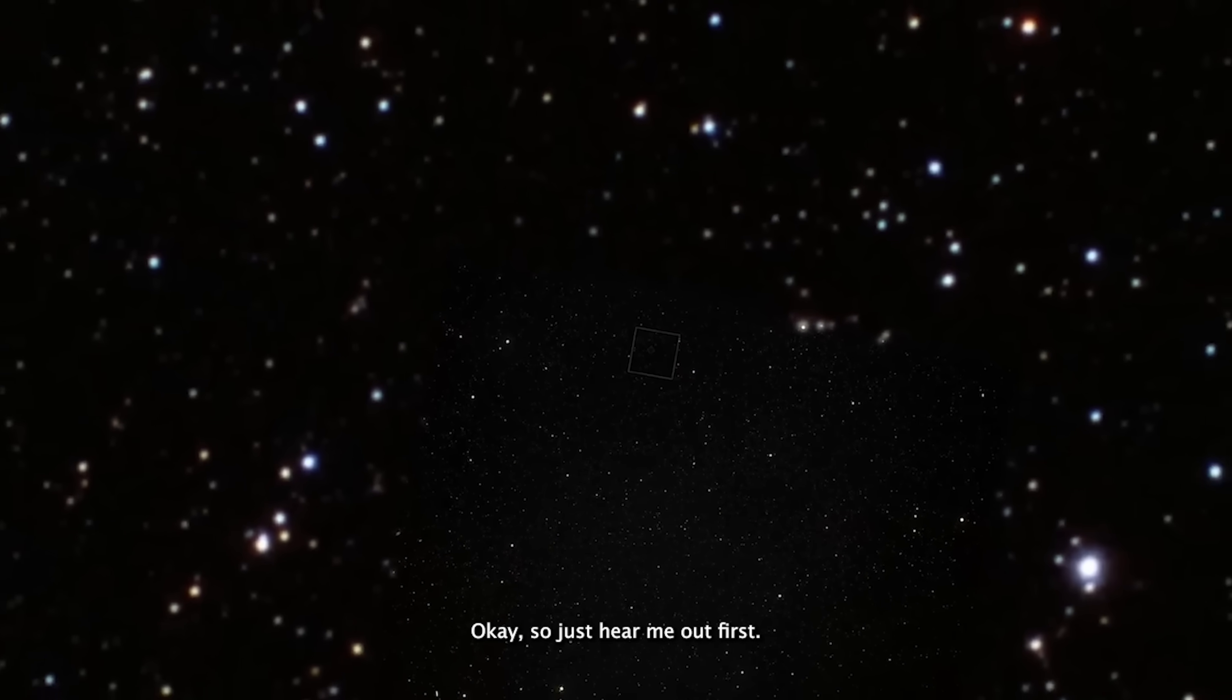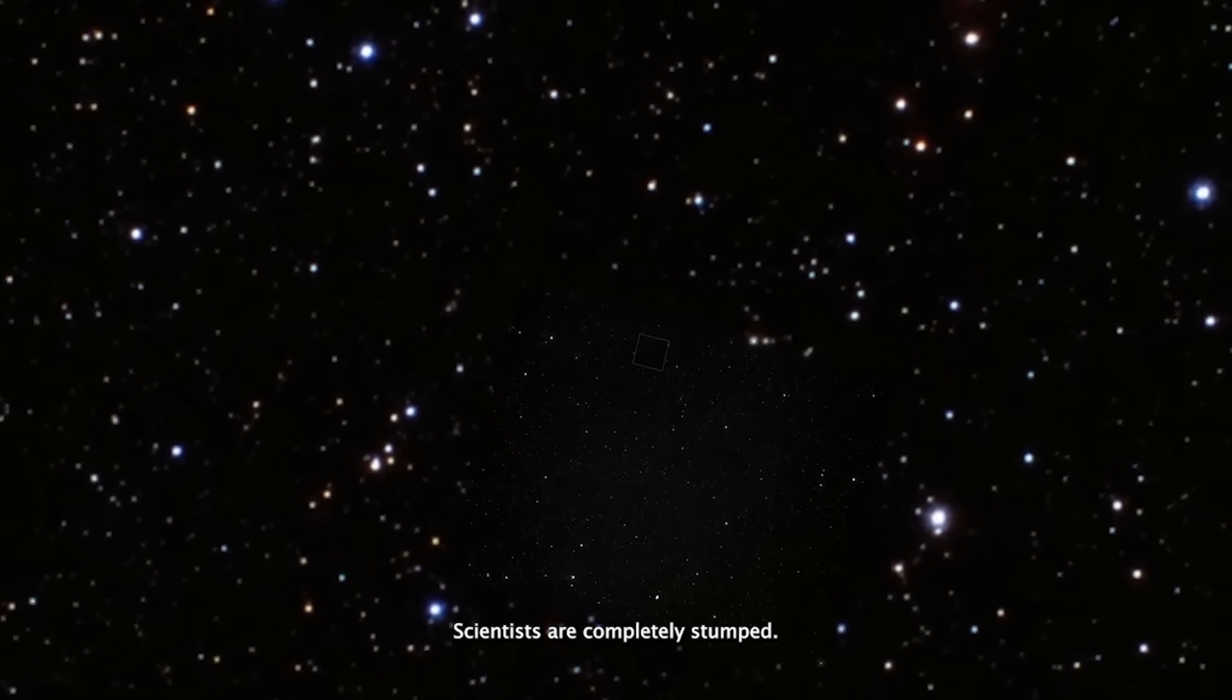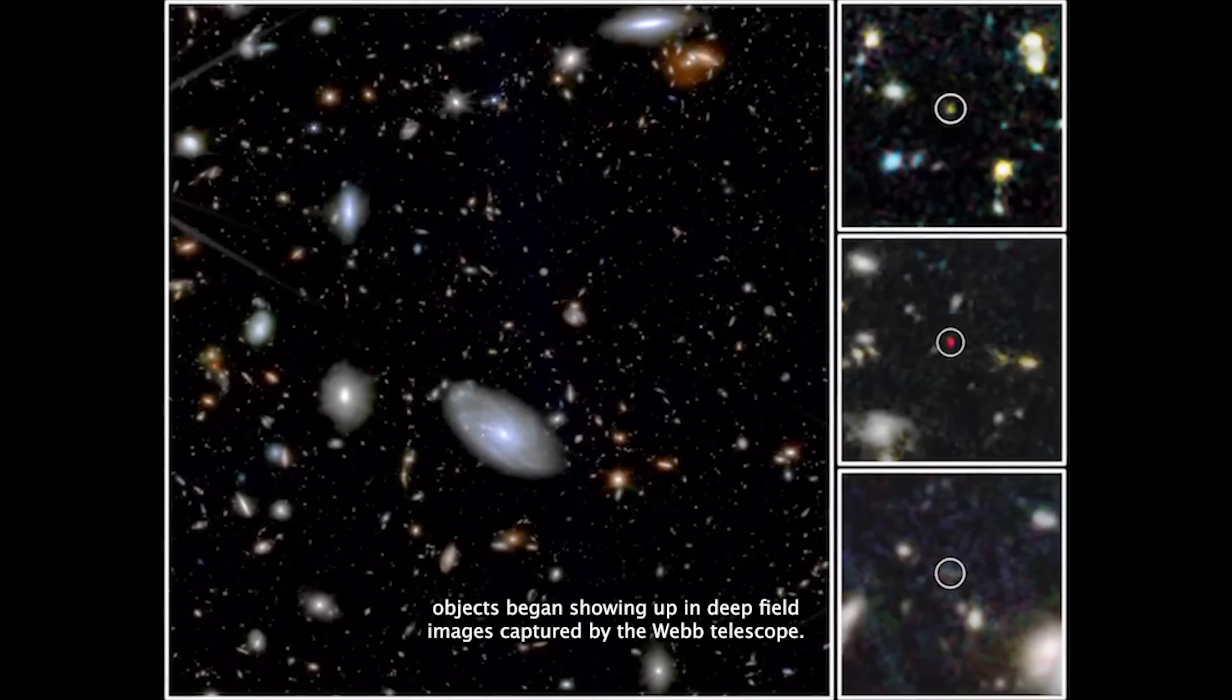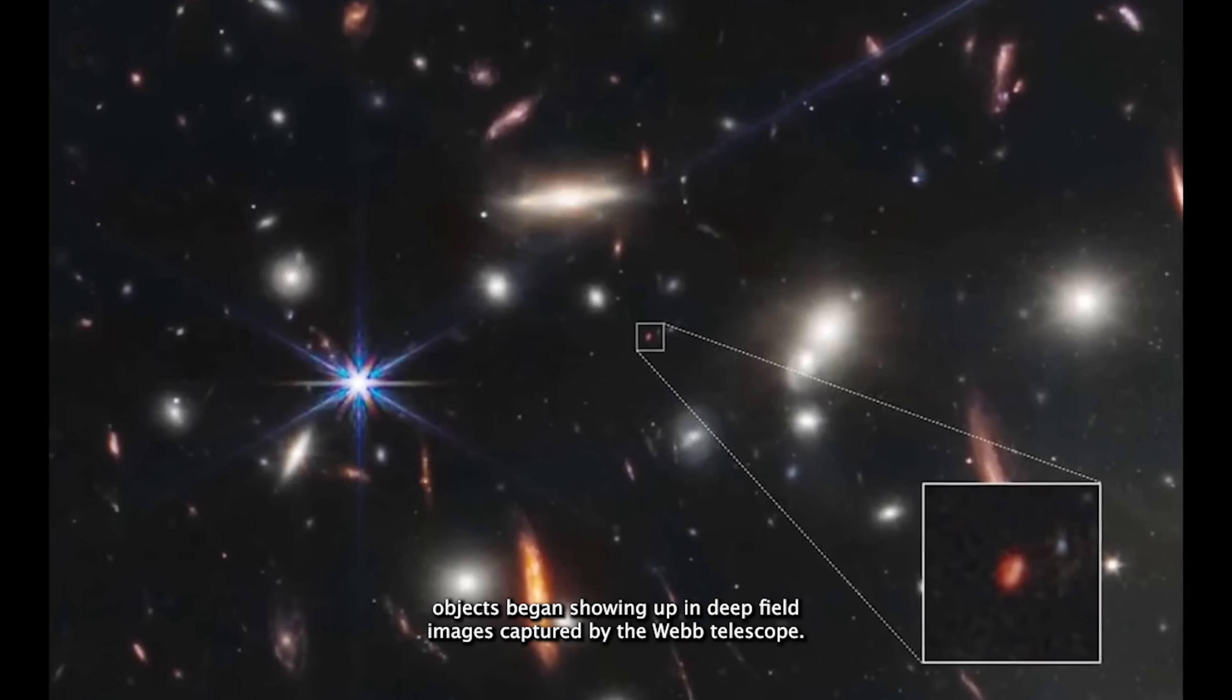Just hear me out first. Scientists are completely stumped. At least for starters, their trusted theories are falling apart as mysterious unidentified objects begin showing up in deep field images captured by the Webb telescope.